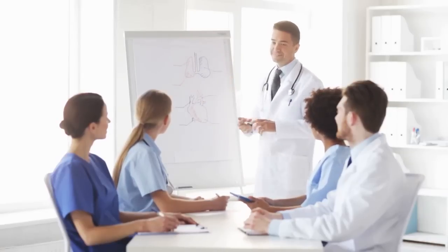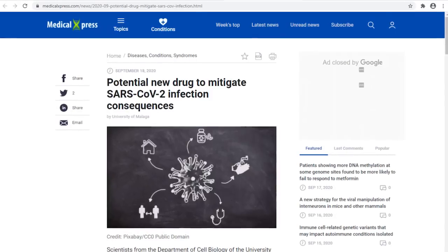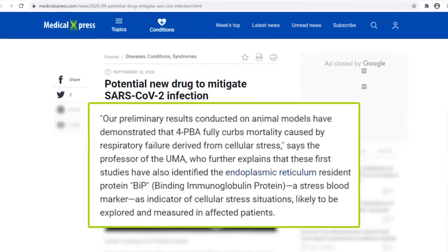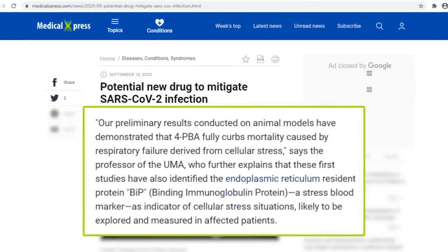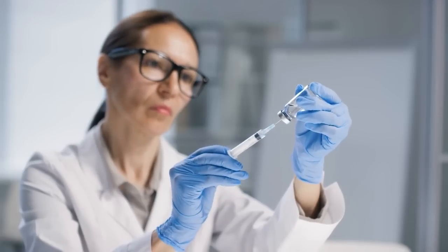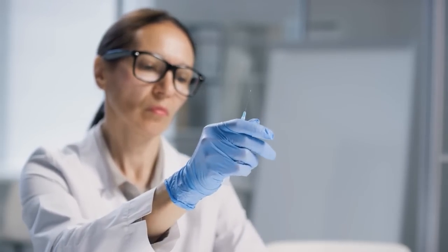But doctors have to know the most effective ways to manage cytokine levels. According to Medical Express, the repurposed 4PBA experimental drug has been tested on animal models. The drug effectively curbed the mortality induced by respiratory failure associated with cellular stress.